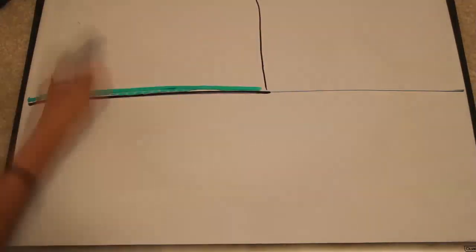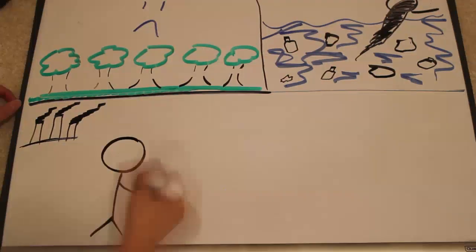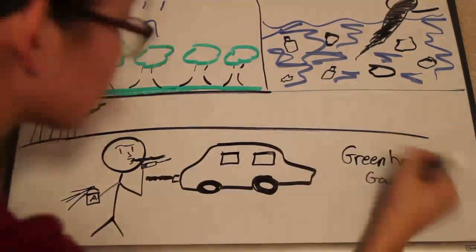People on Earth are only making this problem worse by causing deforestation, pollution, and worst of all, emitting greenhouse gases such as CO2.